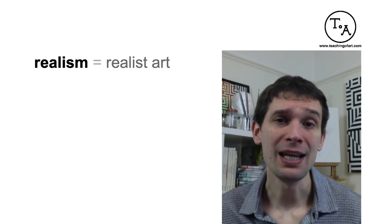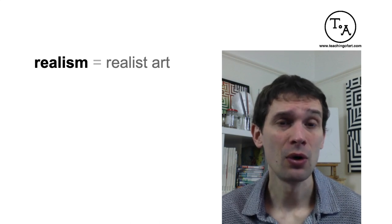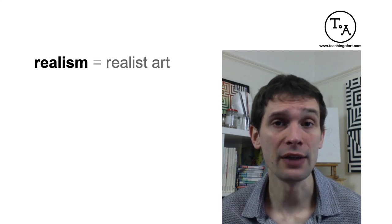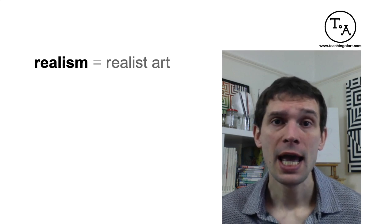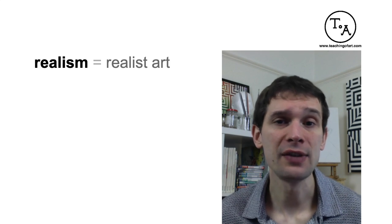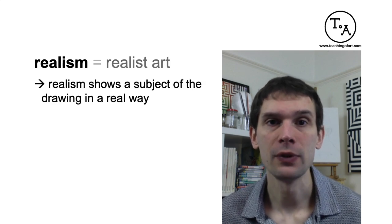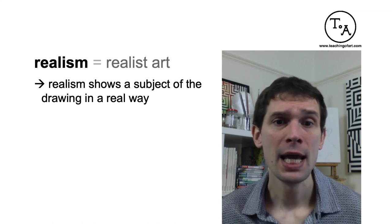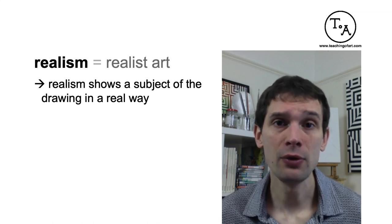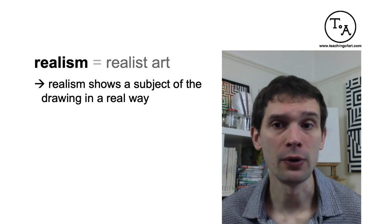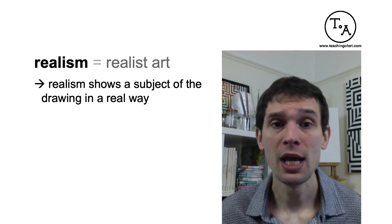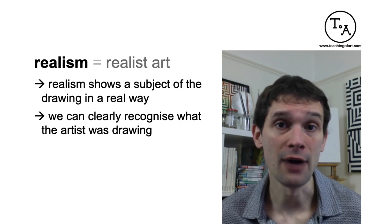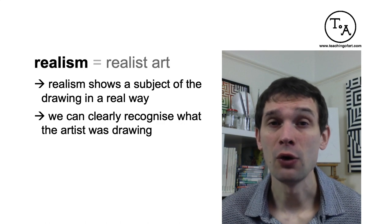The first term is realism, or realist art, or you could also say realistic art — I think in this context it would mean the same thing. Realism depicts or shows its subject in a real way. Basically, the subject looks like a photo; it is very real. It doesn't necessarily have to look exactly like a camera photo, but it is close. We can clearly recognize the subject and the surrounding environment, and basically there are a lot of details.